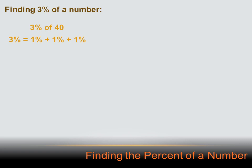Let's take this idea a little bit further. Let's say we wanted to find 3% of a number — let's try 3% of 40. Well, 3% equals 1% plus 1% plus 1%. 1% of 40 equals 0.4, because we just take the decimal place and move it 2 to the left. So 3% would be 0.4 plus 0.4 plus 0.4, which is 1.2. 3% of 40 is 1.2.